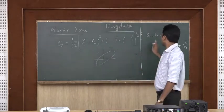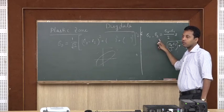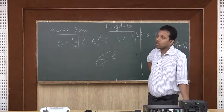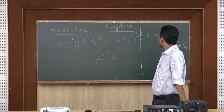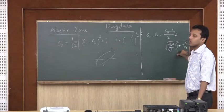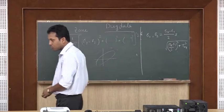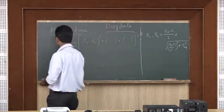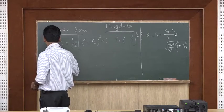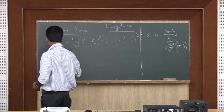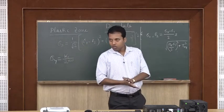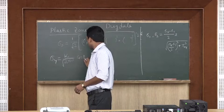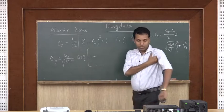In plane stress, the σ_z term is not there. In two dimensions, I have to put in σ₁ and σ₂ values. Under plane stress, σ₃ = 0 and σ₁, σ₂ = (σ_x + σ_y)/2 ± the radical term. We have σ_x = K₁/√(2πr) * cos(θ/2) * (1 − sin(θ/2)sin(3θ/2)) and σ_y = K₁/√(2πr) * cos(θ/2) * (1 + sin(θ/2)sin(3θ/2)).